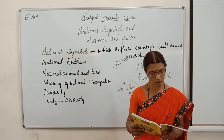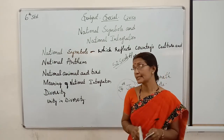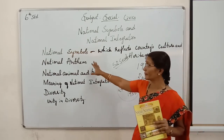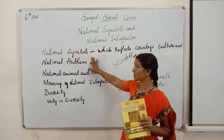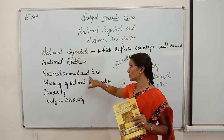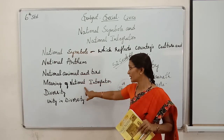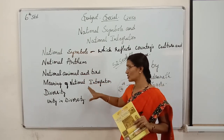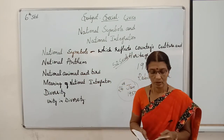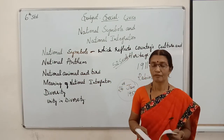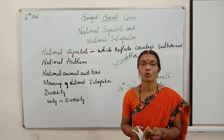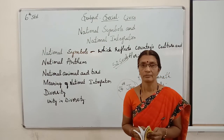I think you have understood the lesson. In this lesson, we covered national symbols, national anthem, national flag, national animal and bird, the meaning of national integration, diversity, and unity in diversity. Once again, refer to the textbook for further study. Thank you.